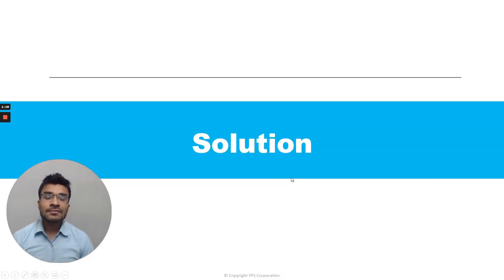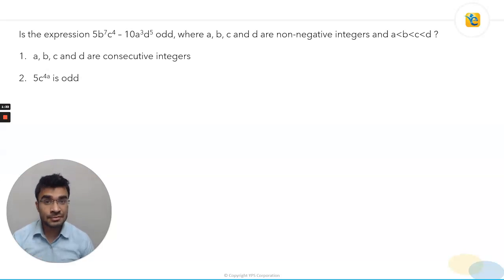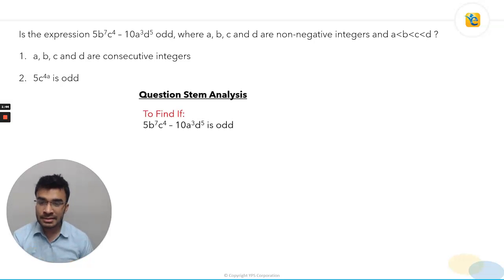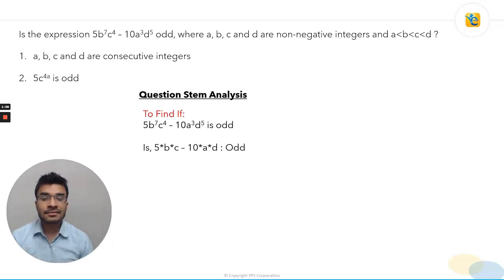One thing to keep in mind while solving a DS question is that the question stem wants to tell you certain things. If you infer that information, it really helps you solve DS questions a lot faster. So in this question, we are first going to analyze the question stem. The question gives me a complex expression which is essentially the difference of two expressions: 5b⁷c⁴ minus 10a³d⁵, and it asks whether this expression is odd or not. I can write this more simply as 5bc minus 10ad.